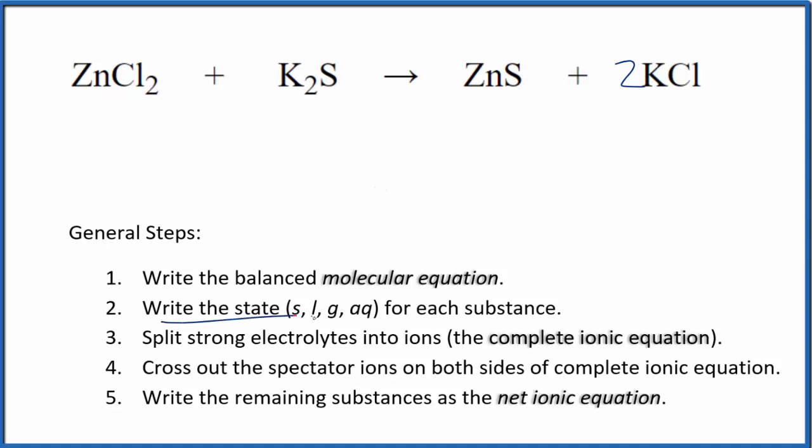So now we need to write the state for each substance. If you know your solubility rules, chlorides are very soluble. So that'll be aqueous, dissolve in water. Compounds with potassium, also very soluble, aqueous. Sulfides in general, though, they're insoluble. And when we have zinc with a sulfide, that means it's going to be insoluble in water. It won't dissolve. It'll be a solid.